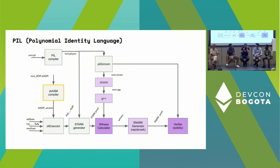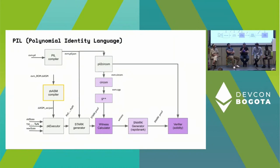PIL means polynomial identity language. When you define a circuit that's based on polynomials — Plonk is an example — PIL allows you to write those identities, and out of those identities, build the proof automatically, the same way you do in a normal zero-knowledge language like CIRCOM. It's a kind of abstraction where you can just focus on writing what identities you want to fulfill.